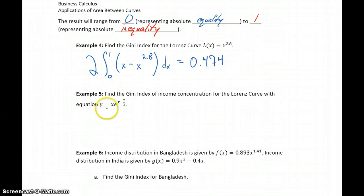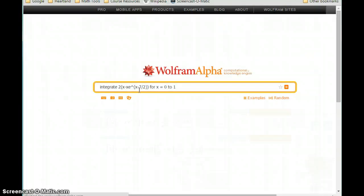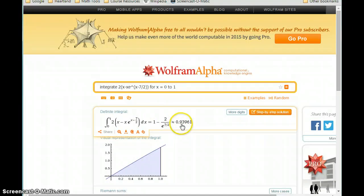For a more complicated expression, y equals x e to the x minus 7 halves, our approach would be the same. We would take 2 times the integral of 0 to 1. We would start with y equals x as that larger function, minus x e to the x minus 7 halves. So all that is in that exponent for e. So our expression mostly stays the same. We just update this second function, which will become x e to the x minus 7 halves. And we get an area of about 0.94.